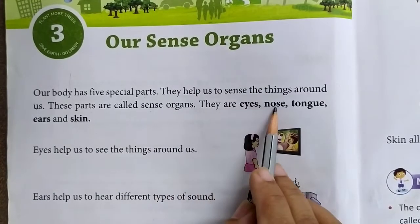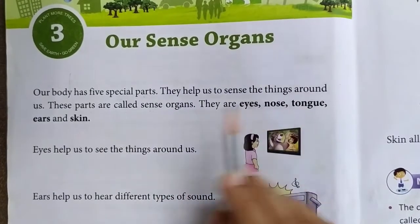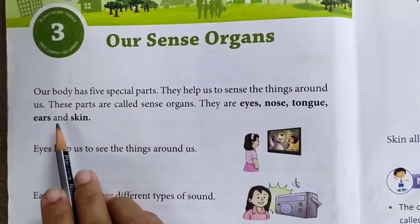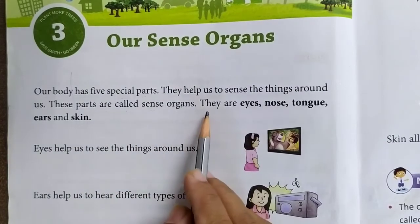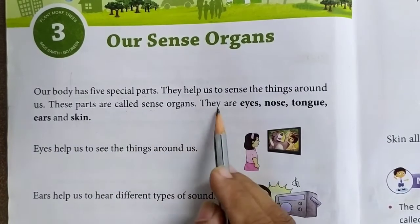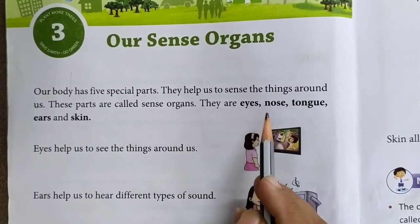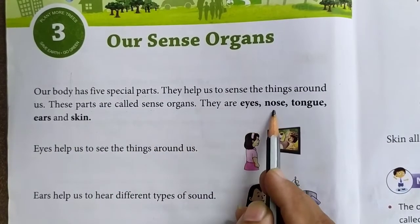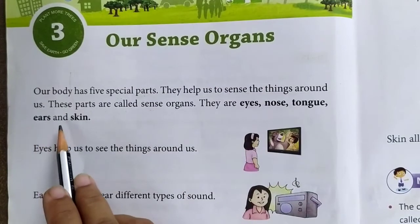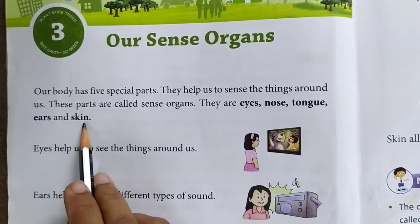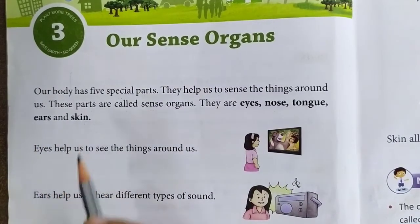They are eyes, nose, tongue, ears and skin. Woh kaun se hain? Toh woh aankh, naak, jeeb, kaan aur twacha hain.